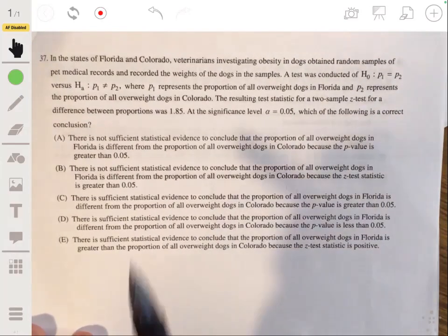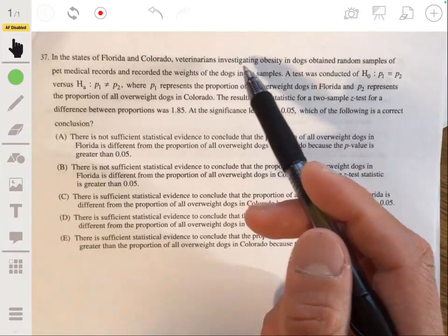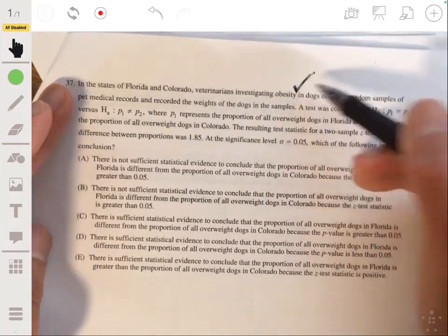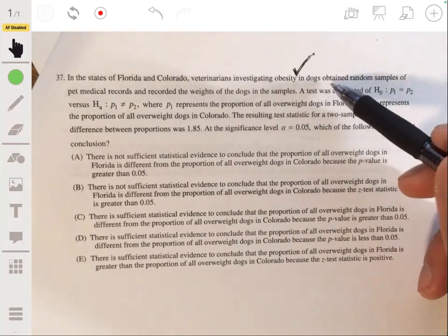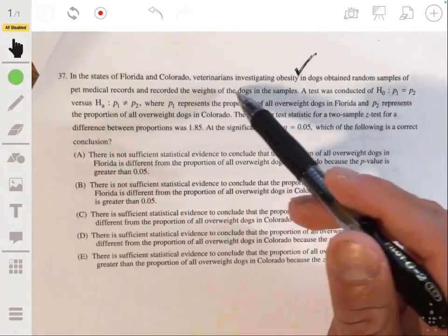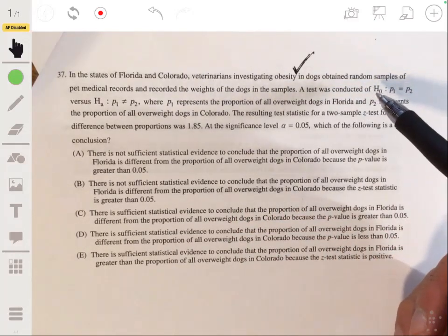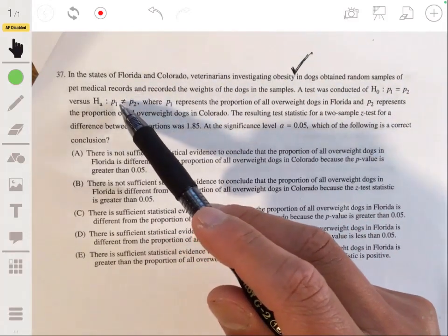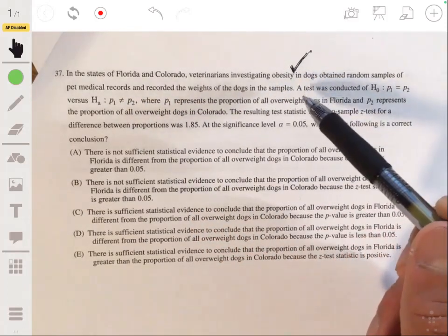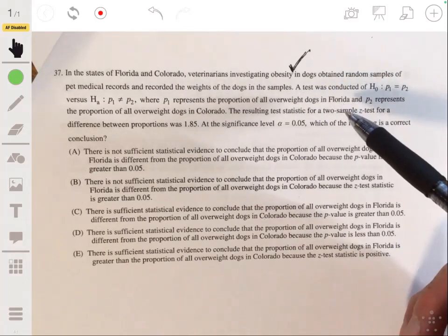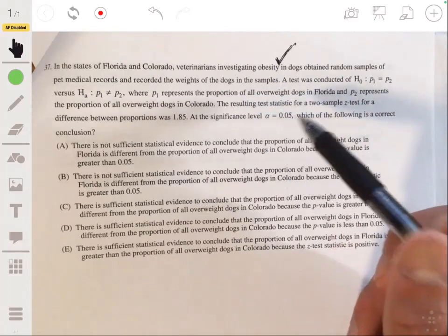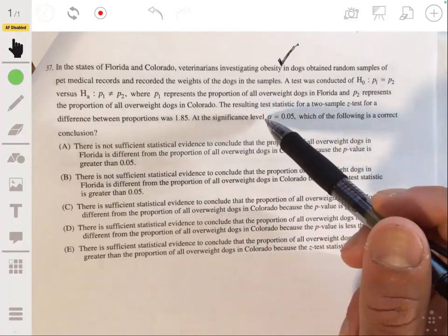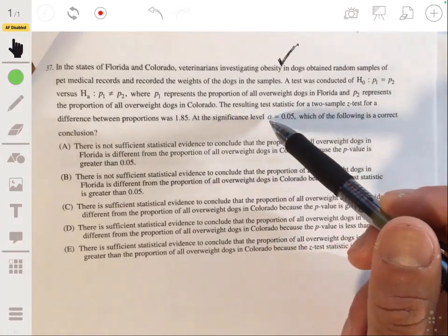All right, 37. In the states of Florida and Colorado, veterinarians investigating obesity in dogs obtained random samples of pet medical records and recorded the weights of the dogs in the samples. A test was concluded of H0, your null hypothesis, where the proportions P1 and P2 are equal versus the alternative hypothesis where they're not equal. P1 represents a proportion of all overweight dogs in Florida, and P2 represents a proportion of all overweight dogs in Colorado. We get a test statistic for a two-sample Z test for a difference between the proportions of 1.85, and we're using a significance level of 0.05.